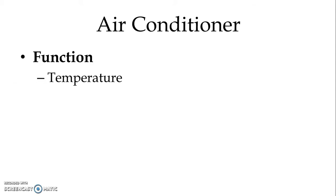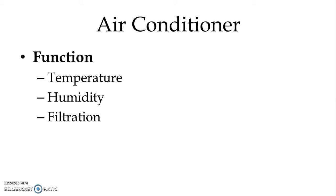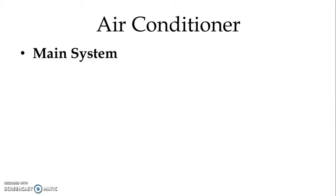Air conditioner controls the temperature of the air within a room. It also controls the humidity of the air in the room. It provides filtration of the air, and it also controls the movement of the air within a room. So these are the main four functions expected from the room air conditioner. Air conditioners have three different main systems.